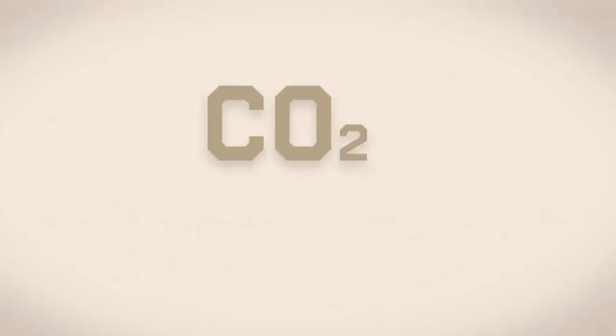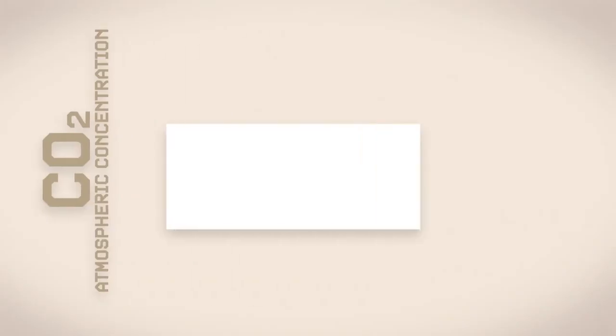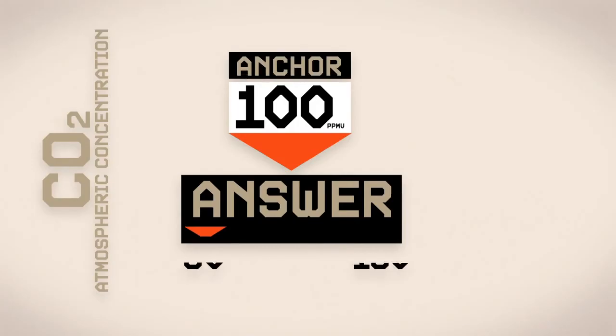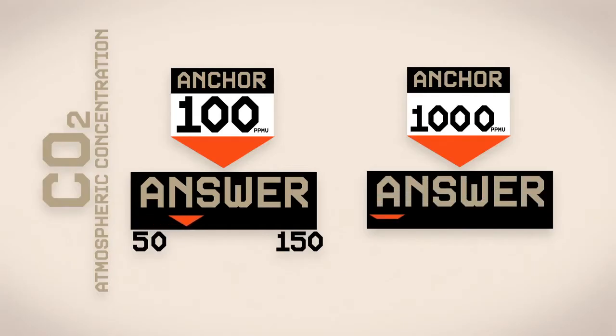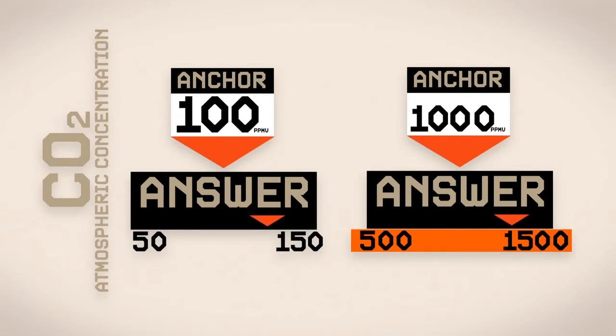For example, if I said to you, do you think that the concentration of carbon dioxide in the atmosphere is greater than 100 ppmv, and then I ask you to make an estimate, versus if I said to you, do you think it's greater than 1,000 ppmv, and I ask you to make an estimate. If you didn't really know, then the chances are that when I gave you that 100 anchor, your estimate would be lower than if I gave you that 1,000 anchor.